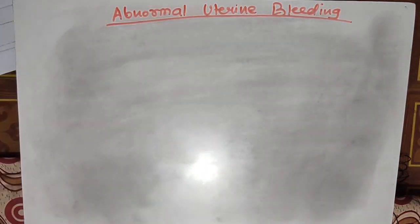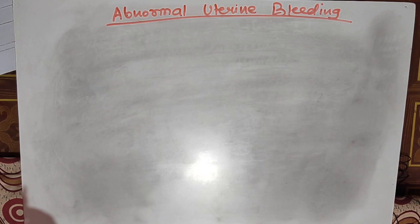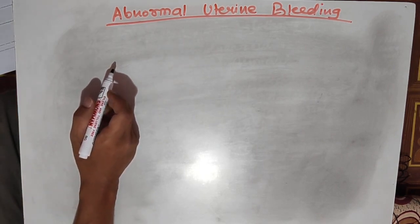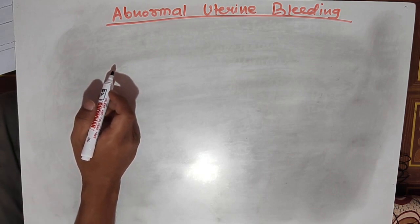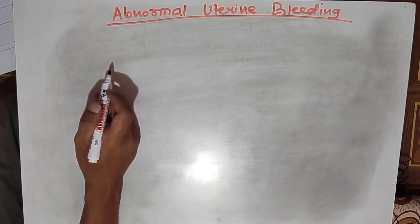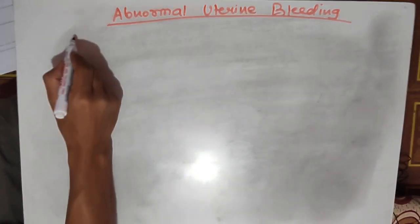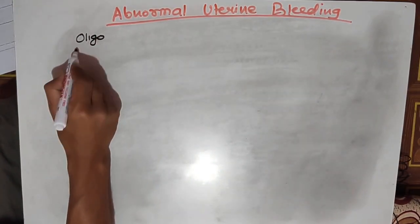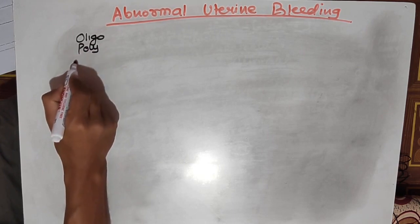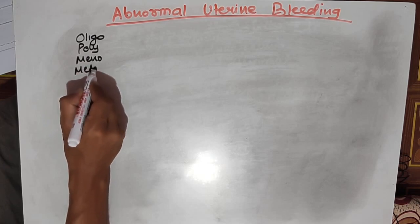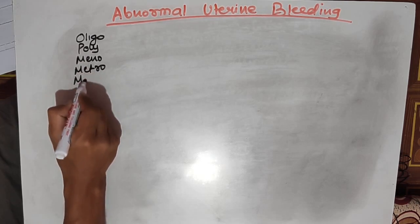In this lecture we will study the most important points in clinical setting related to abnormal uterine bleeding. Any deviation from the normal bleeding period in menstruation is known as abnormal uterine bleeding. It can be oligomenorrhea, polymenorrhea, menorrhagia, metrorrhagia, or menometrorrhagia.